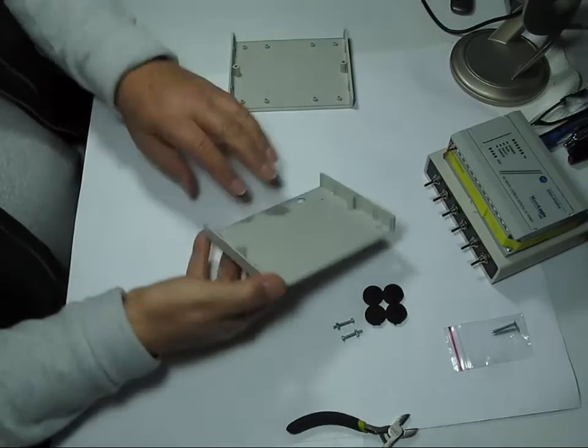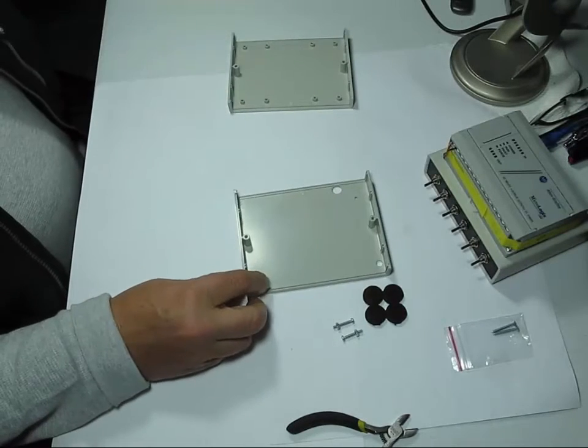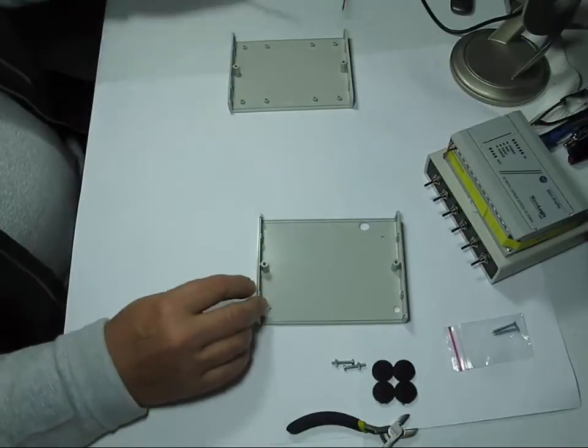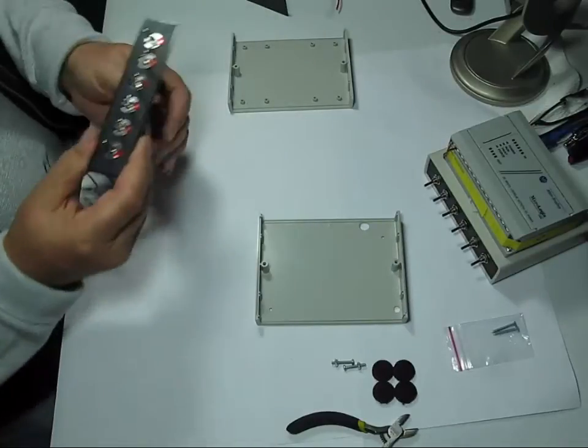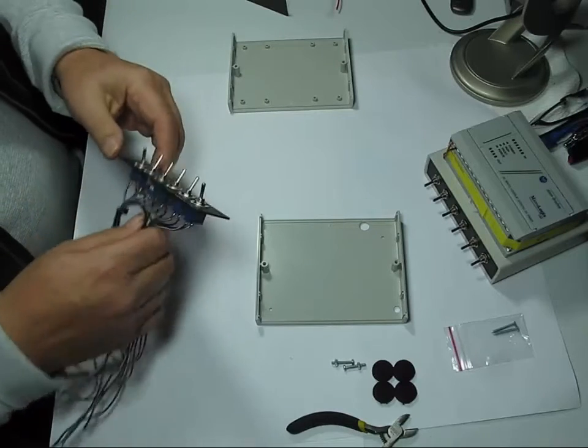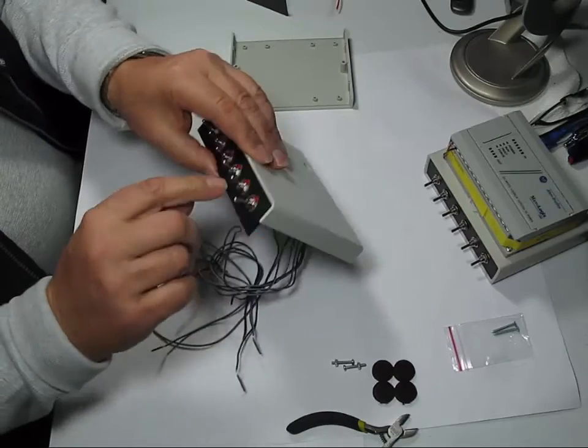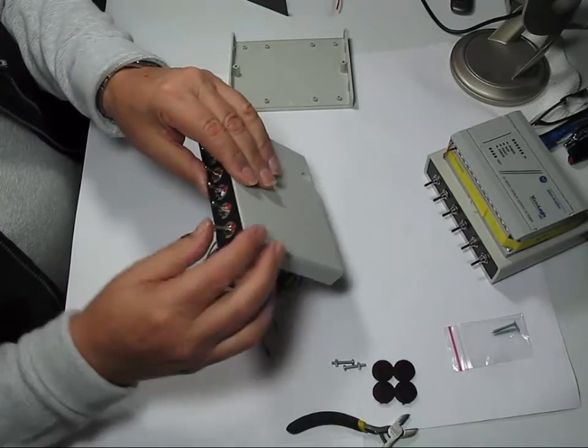The next step is with the top of the box. We attach the switch plate. Now remember this is the top. We want the switches, we want the red or the on to be up.